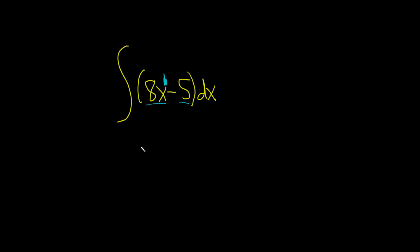So 1 plus 1 is 2. So we write 8 times x squared, and then you divide by the result. So just divide by 2.